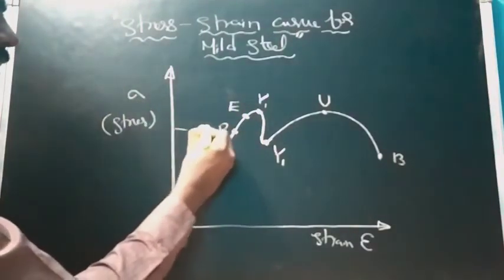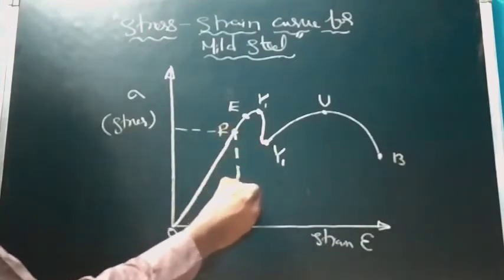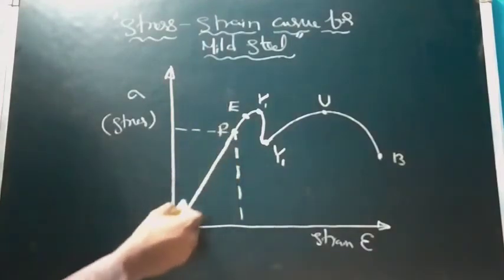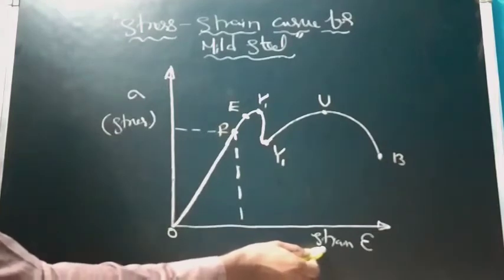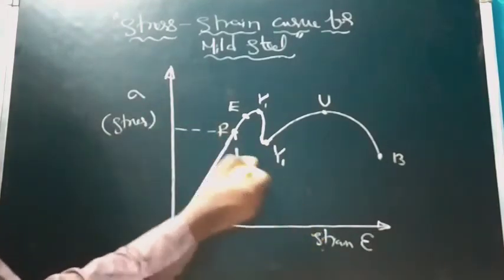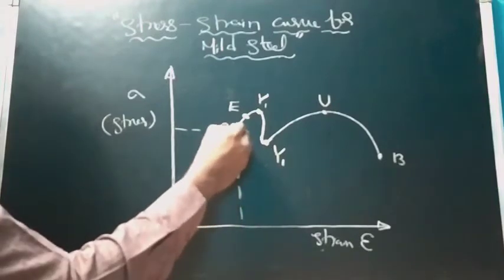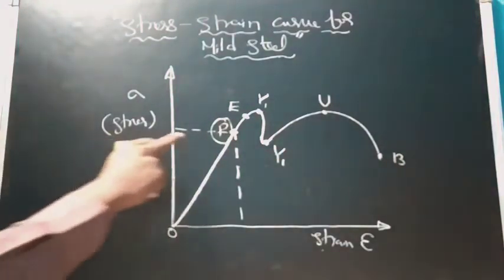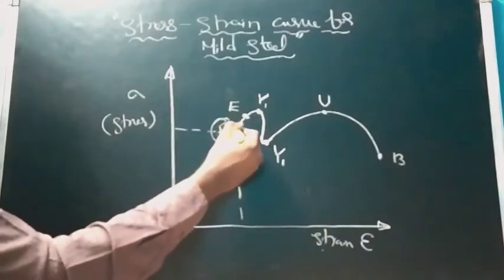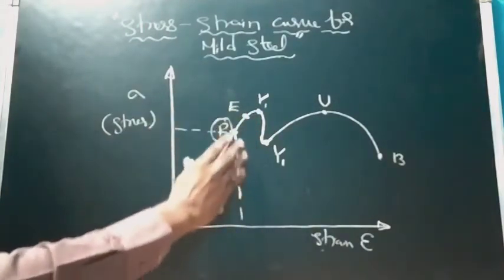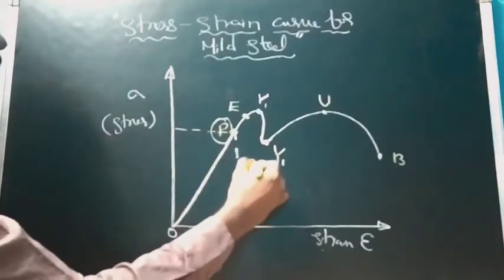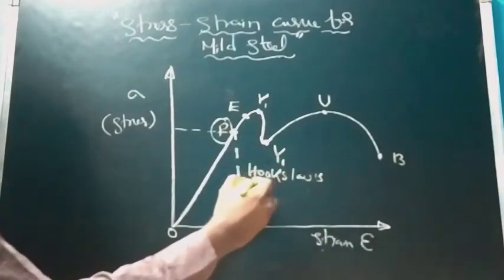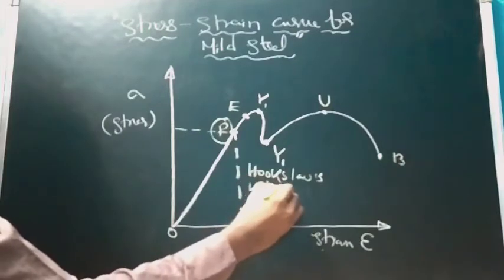Till point P, Hooke's law is valid. This part shows stress is directly proportional to strain — that is Hooke's law. So Hooke's law is valid till the proportionality point, which is the point to which stress is linear and proportional to the strain.